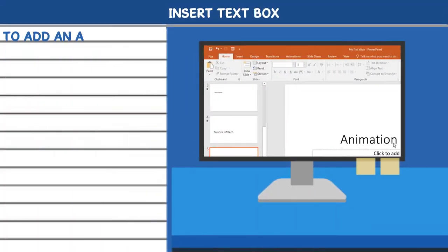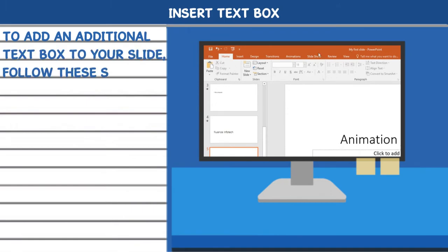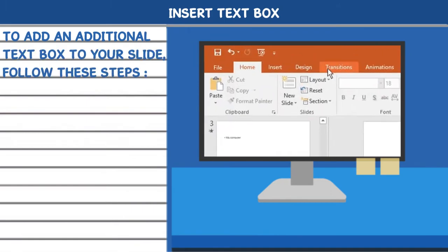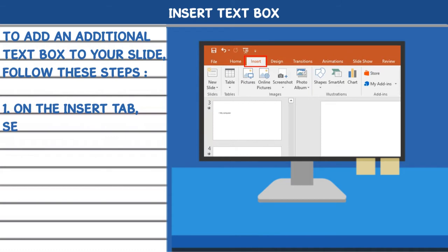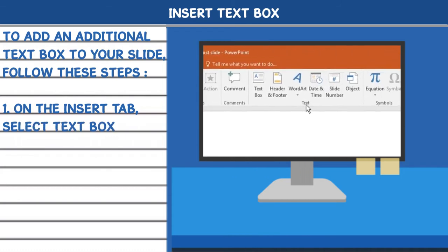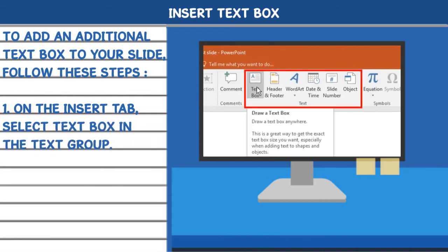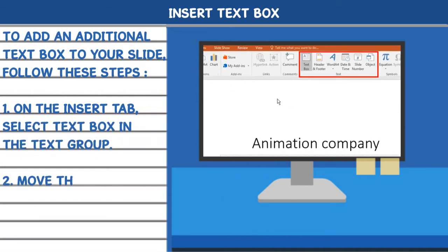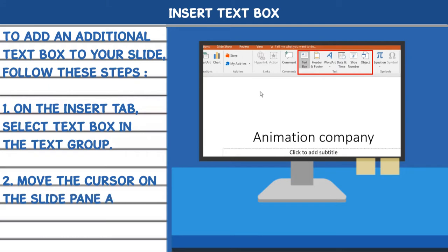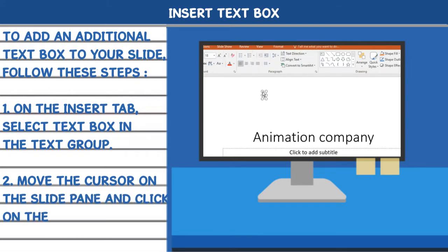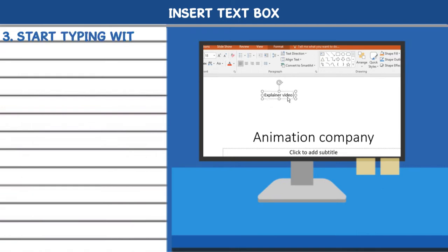Insert text box. To add an additional text box to your slide, follow these steps. 1. On the insert tab, select text box in the text group. 2. Move the cursor on the slide pane and click on the desired place to add the text box. 3. Start typing within the text box.